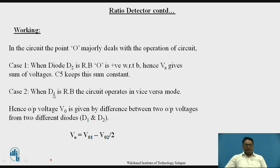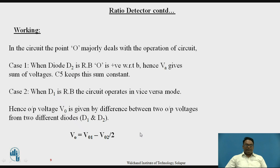In Case 2, D1 is in reverse bias. Hence, the circuit operates in vice versa mode, and the output taken at VA is the difference of voltages. Here also, C5 keeps the sum constant. Hence, the output voltage V0 is given by the difference between the two output voltages from diodes D1 and D2: V0 = (V01 − V02) / 2.